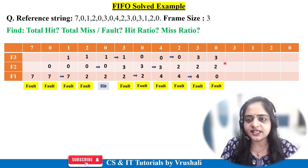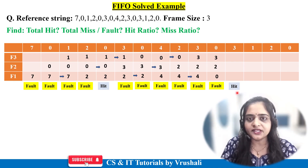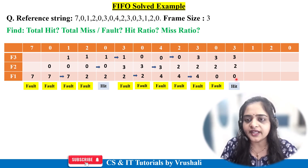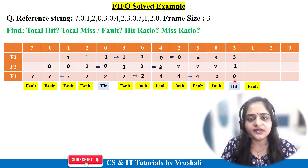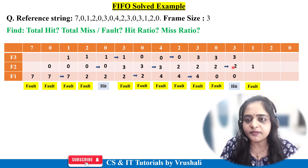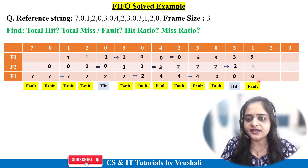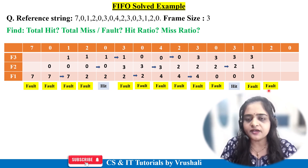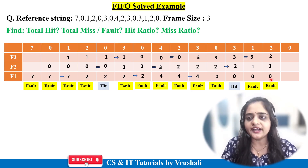Next is page 3: already present in memory — page hit, no replacement needed, write data as is. Next is page 1: not present — page fault; replace 2 with 1. Next is page 2: not present — page fault; replace 3 with 2. Finally, page 0: already present in main memory — page hit, write data as is.